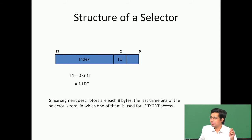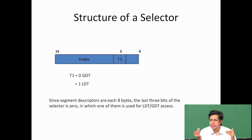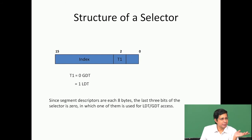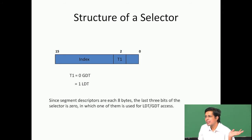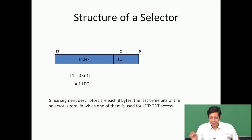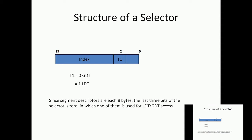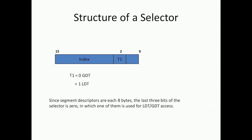Every offset within that address will also be a multiple of 8. If I have a multiple of 8, the last 3 bits are 0s. Those last 3 bits can be used for something else, and one of those 3 bits - the most significant of those 3 bits - is used to indicate whether I am trying to access that descriptor in the GDT or in the LDT. Since segment descriptors are each 8 bytes, the last 3 bits of the selector are always 0, one of which indicates GDT or LDT.